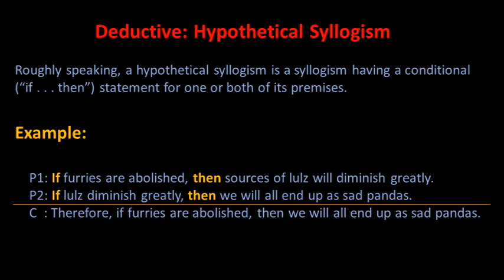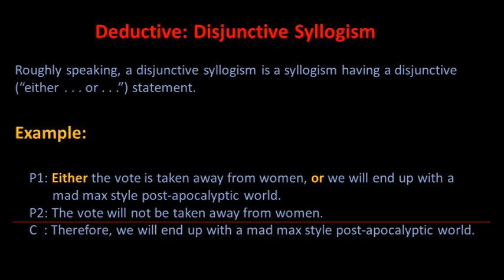A hypothetical syllogism is a syllogism having a conditional if-then statement for one or both of its premises. For example: if furries are abolished, then sources of lulz will diminish greatly; if lulz diminish greatly, then we will all end up as sad pandas; therefore, if furries are abolished, then we will all end up as sad pandas. A disjunctive syllogism is a syllogism having a disjunctive 'either-or' statement. For example: either the vote is taken away from women or we will end up with a Mad Max style post-apocalyptic world; the vote will not be taken away from women; therefore, we will end up with a Mad Max style post-apocalyptic world. As with hypothetical syllogisms, such arguments are usually best taken as deductive.